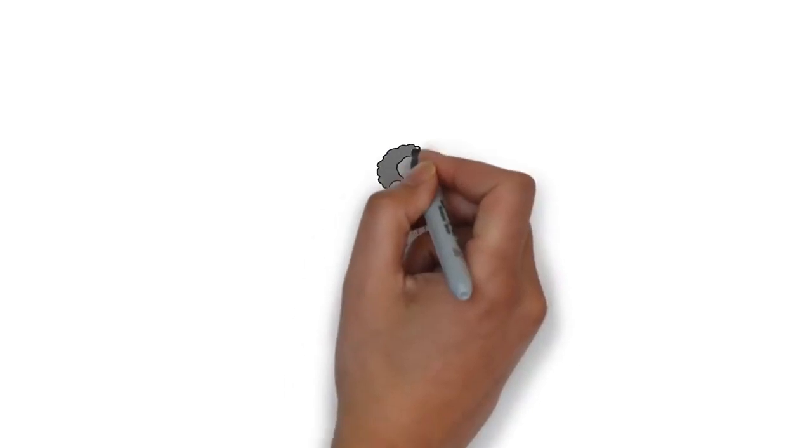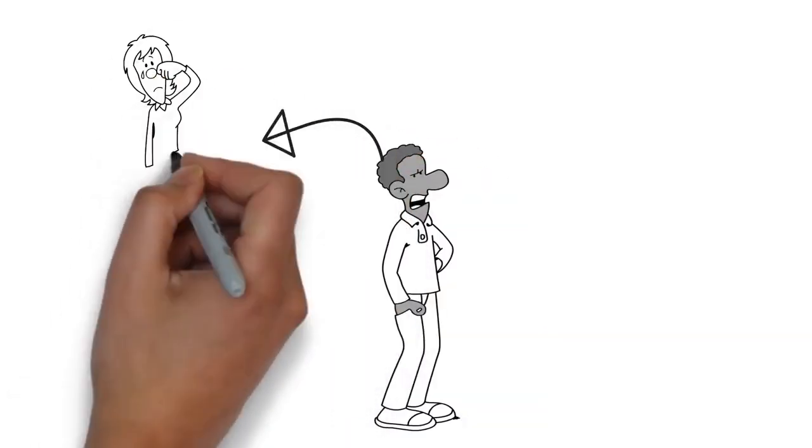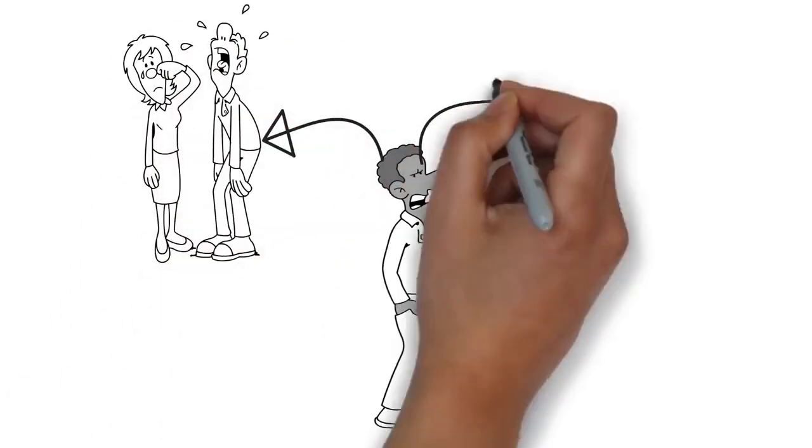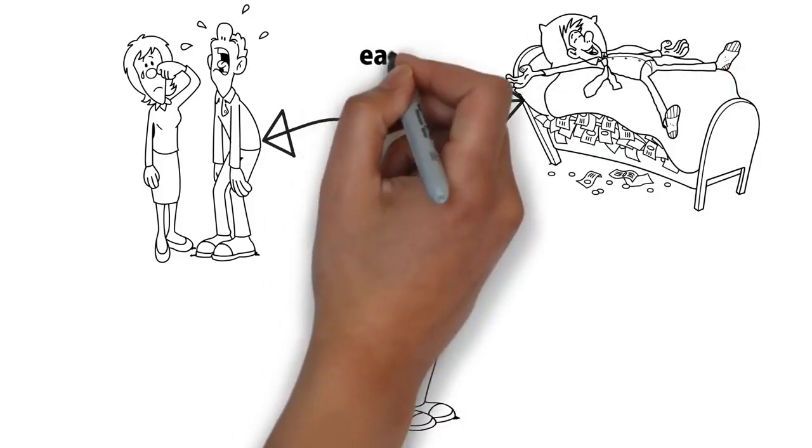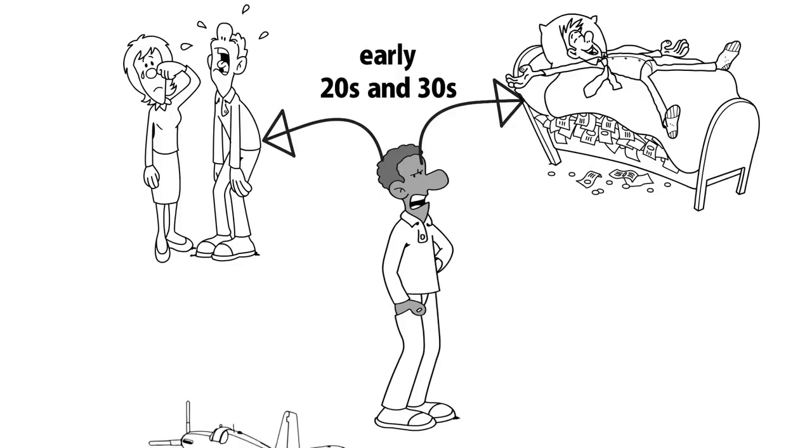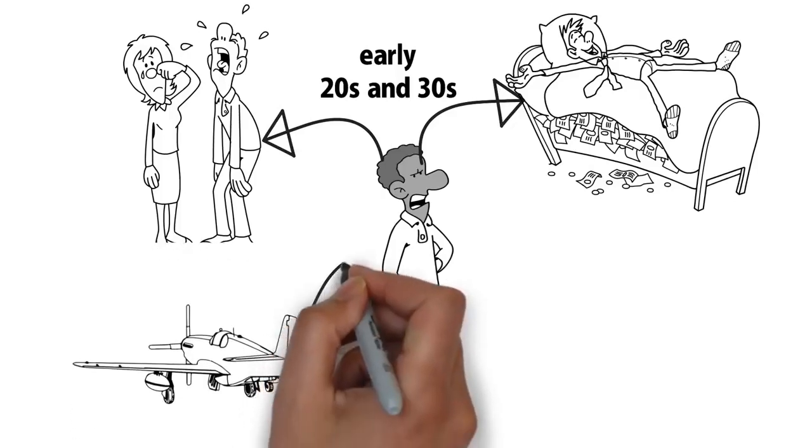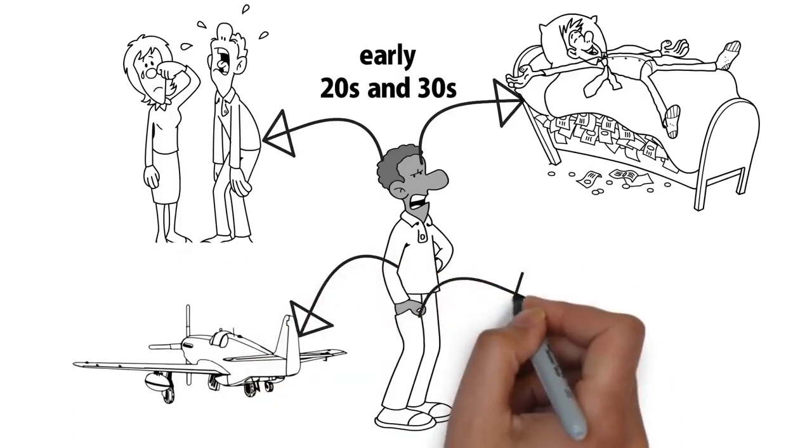You are not a yahoo boy because your family is suffering. You are a yahoo boy because you are in a hurry to make money in your 20s and your early 30s. You want to buy aircraft, you want to buy houses.